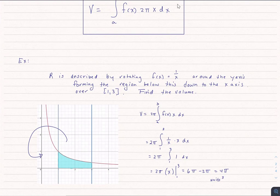We have r, this region r, described by rotating the function f of x equals 1 over x around the y-axis. Down to the x-axis is the region r that we're looking at. And we want to find the volume over the region 1 to 3.